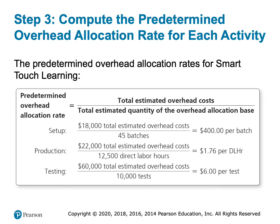Let me give you a piece of advice: don't be lazy — get in the habit of putting your dollar signs and units on things. When you're working a big multi-step problem and you get to the last step trying to find the correct number, if you haven't labeled anything, you don't know which number to grab. Don't just write 400. Write: setup, $18,000 divided by 45 batches equals $400 per batch; production, $22,000 divided by 12,500 direct labor hours equals $1.76 per direct labor hour. If you leave off labels, you won't know what number is what. Get in that habit and you'll save yourself a lot of mistakes and frustration.